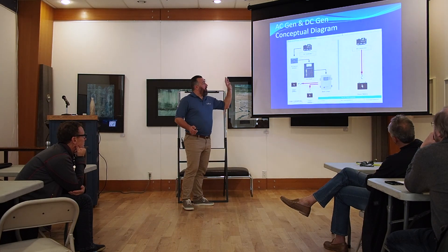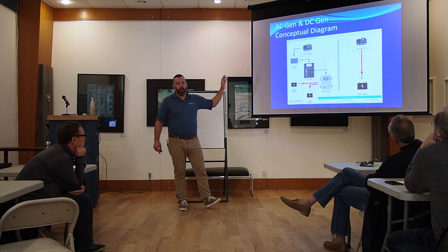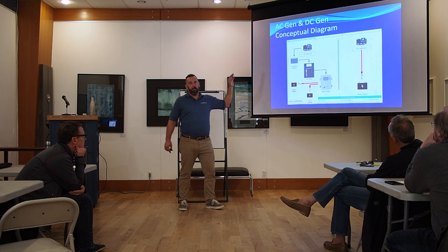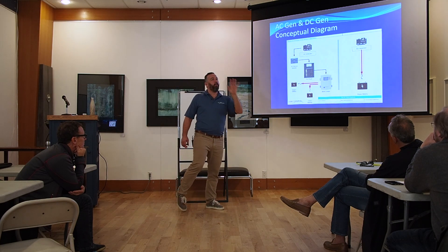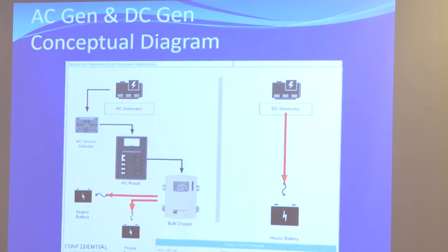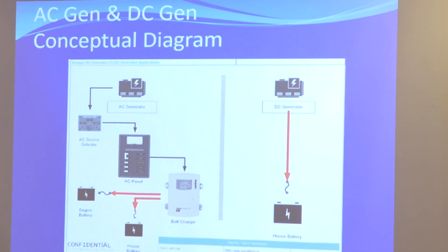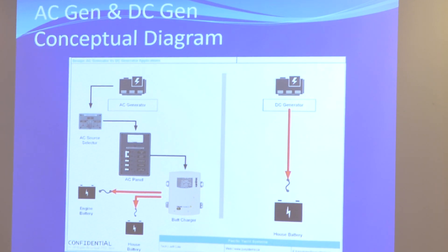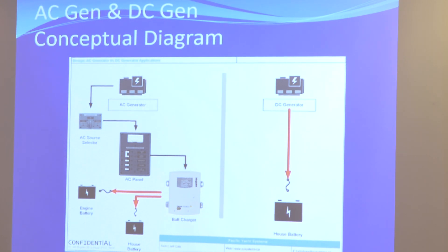Any questions? I'm not going to be coaching people on how to buy an AC generator in this presentation, because that could be a full-on day or weekend. Any questions on generators and DC generators? [Question: You still need a charge regulator in front of the battery, right?] No, the DC generator has it — it's part of it. There's a regulator. Absolutely, there has to be. Same thing — a generator also has an AC regulator inside the generator as well.